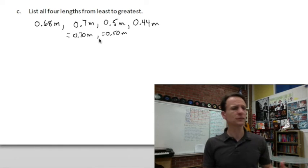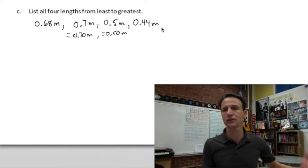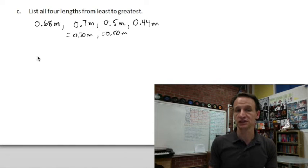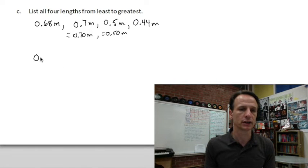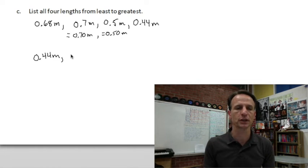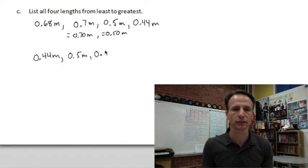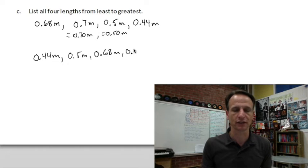Now they're all in hundredths, so we can think of them like plain numbers: 68, 70, 50, 44 hundredths — like 68 hot dogs, 70 hot dogs, 50 hot dogs, 44 hot dogs. Which is the least? 44. So first is 44 hundredths meters. Then comes 50 hundredths, but we write it as given: five tenths. Then 68 hundredths meters.